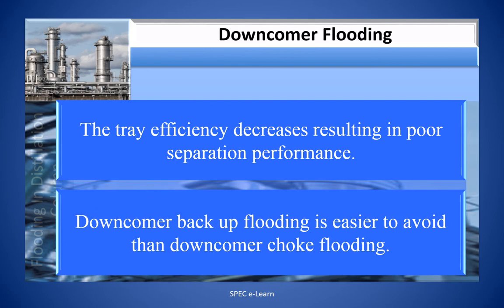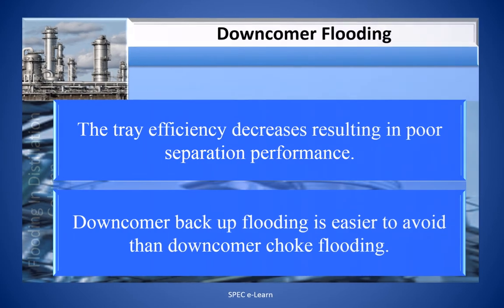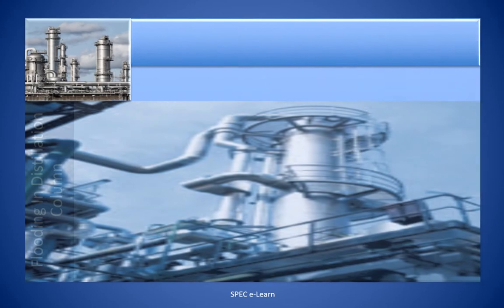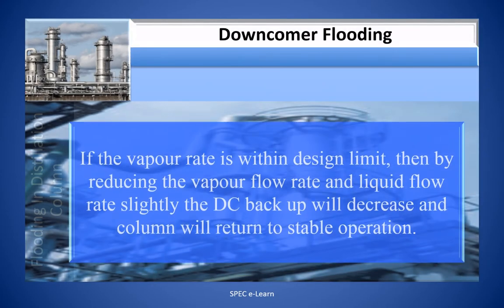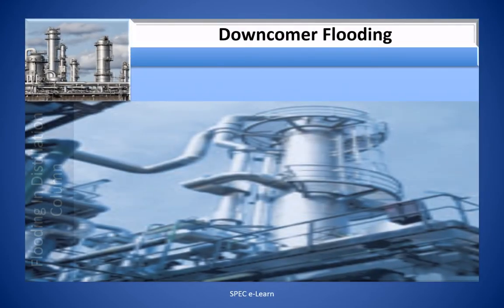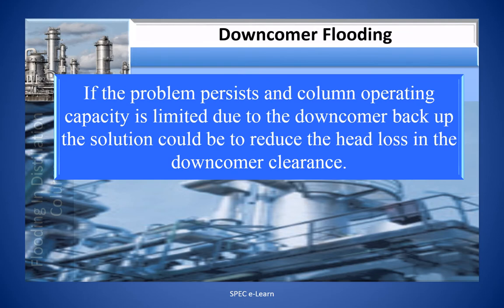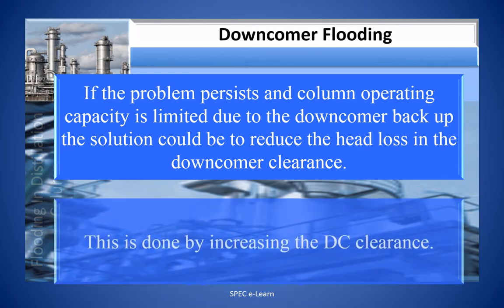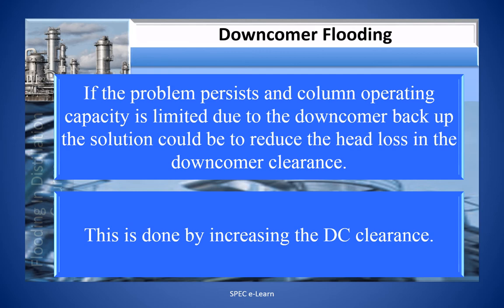Downcomer backup flooding is easier to avoid than downcomer choke flooding. If the vapor rate is within the desired limit, then by reducing the vapor flow rate and liquid flow rate slightly, the downcomer backup will decrease and the column will return to stable operation. If the problem persists and column operating capacity is limited due to downcomer backup, the solution could be to reduce the head loss in the downcomer clearance by increasing the downcomer clearance.